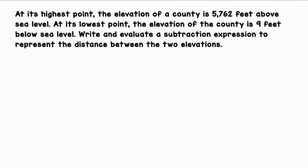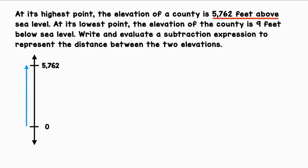At its highest point, the elevation of a county is 5,762 feet above sea level. At its lowest point, the elevation of the county is 9 feet below sea level. Write and evaluate a subtraction expression to represent the distance between the two elevations. Let's use a vertical number line to represent this situation. The highest point is 5,762 feet above sea level.